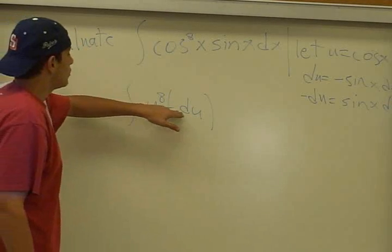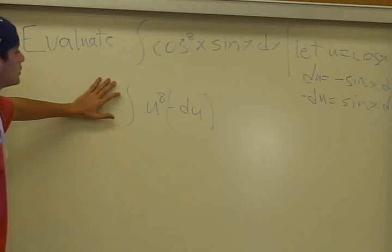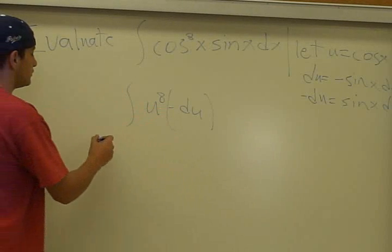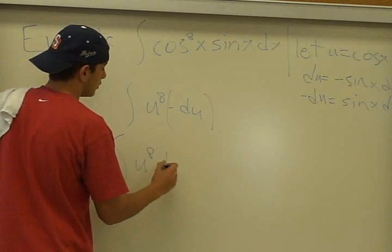So from the laws of integration, the property of integration, we could take out the negative sign and move it out here to the front. So we have negative the integral of u to the a du.